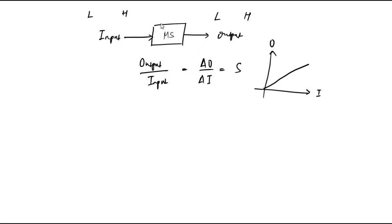One important thing to understand about a measurement system is: at what particular input value do we get a non-zero output? Suppose the input is zero initially. When the input is increased from zero, what is that minimum value of the input at which the output is non-zero — not equal to zero?